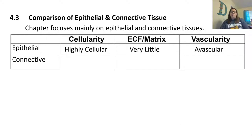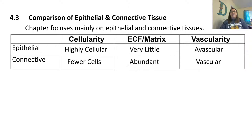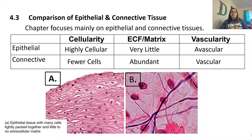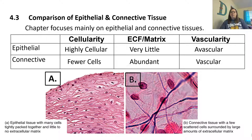Connective tissue is the opposite in all of these. There are very few cells in connective tissue, but those cells create the extracellular matrix, which is abundant with lots of fibers and fluid. Connective tissue is highly vascular with blood vessels. Looking at two pictures, A is epithelial tissue — highly packed cells, very little matrix, and no blood vessels. B is connective tissue — only a few cells with lots of fibers and fluid in between.